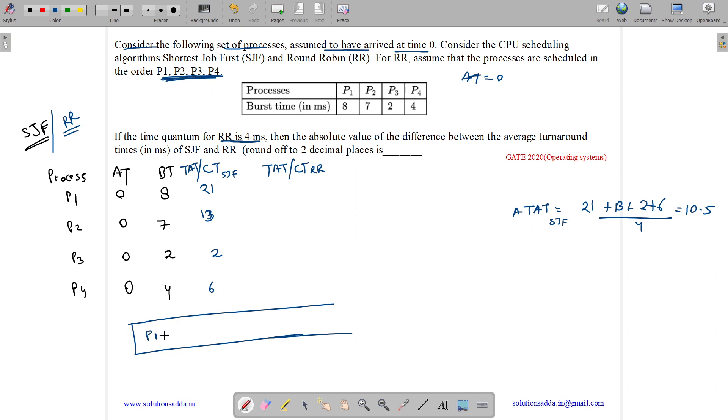So P1 gets scheduled for 4 milliseconds, 0 to 4. So burst time left is 4. Now P2 gets scheduled from 4 to 8. So burst time left is 7 minus 4, 3.